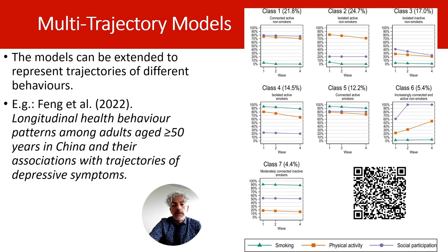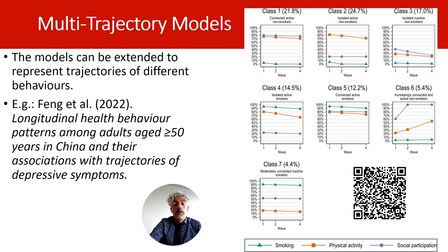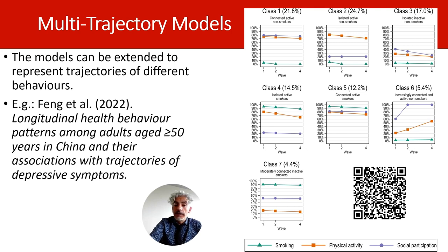It's also possible to extend the models to represent trajectories in different behaviors simultaneously. I provide an example of a study — see the QR code — where researchers identified groups of Chinese elderly people in a longitudinal study who differed in their trajectories of physical activity, smoking, and social participation. For example, a large group was labeled 'isolated active non-smokers' because they were consistently physically active but showed low levels of smoking and also low levels of social participation. The results indicated that trajectory groups characterized by low levels of social participation displayed significantly higher depression scores.